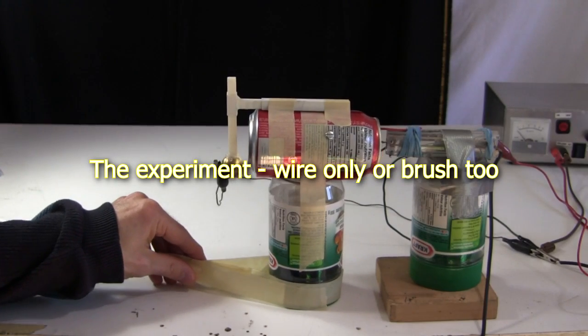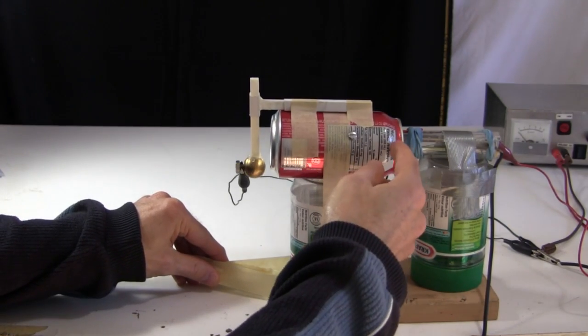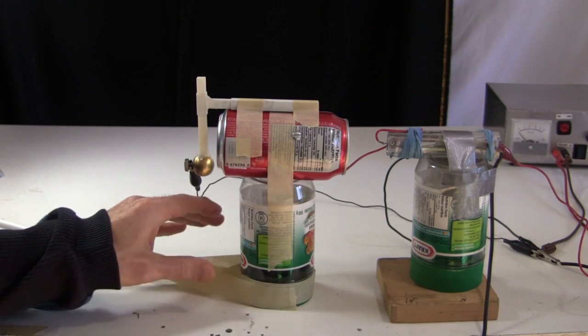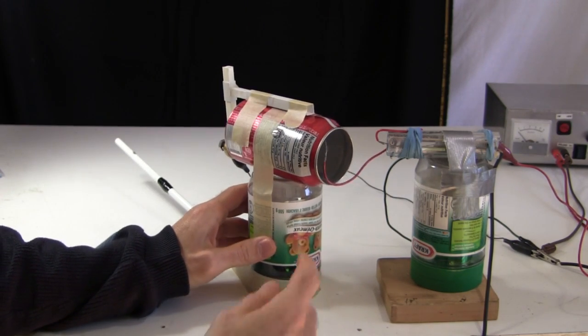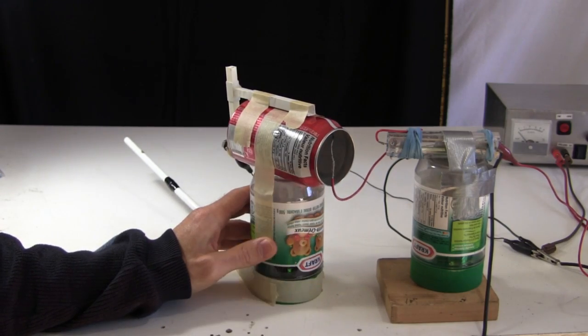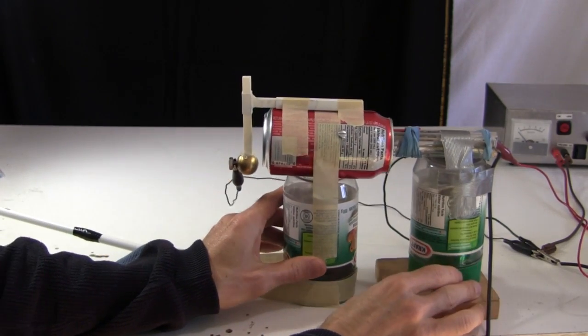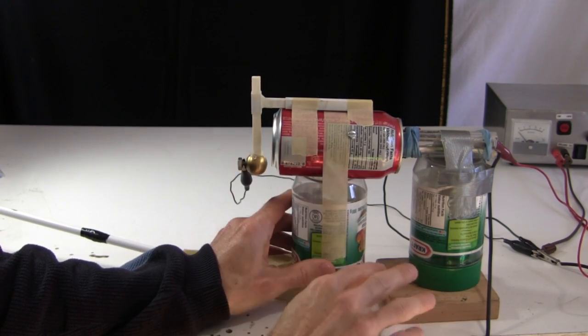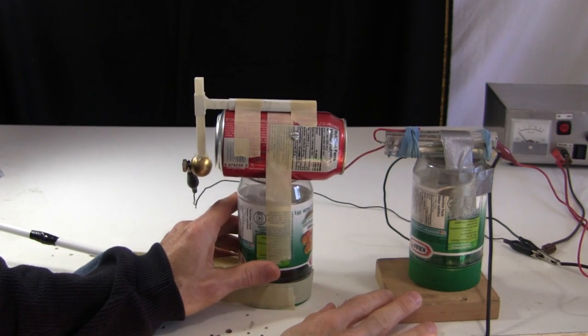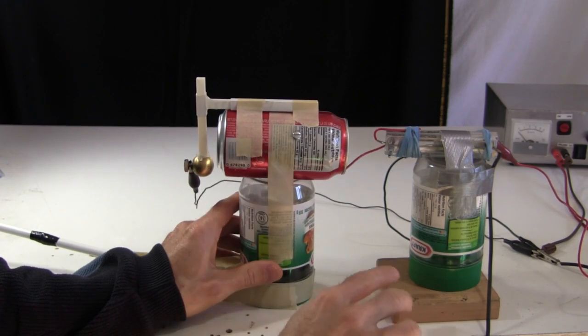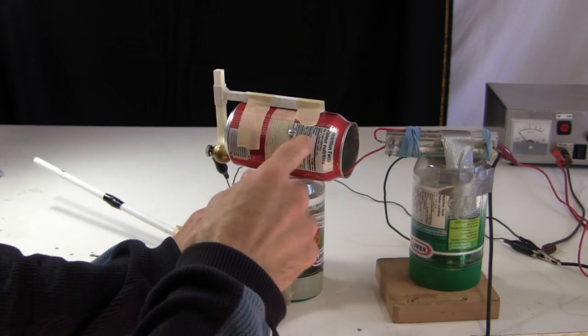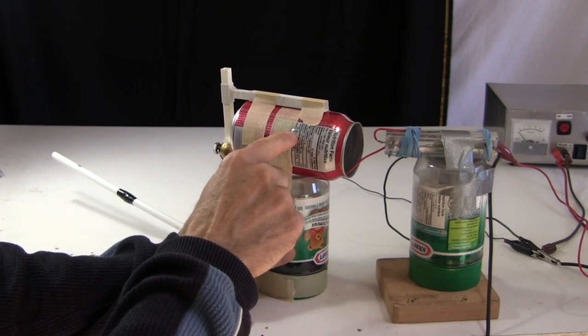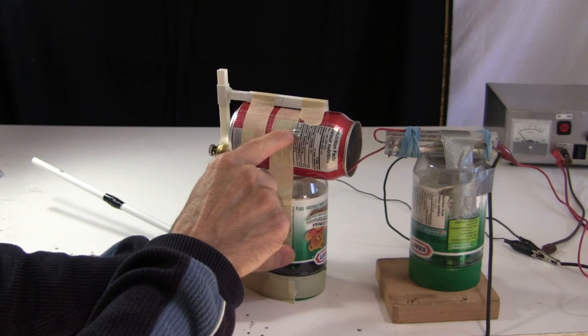So remember the experiment was whether the brush has to be inside the can or whether just the end of the wire has to be inside the can. Now I found a problem here. The inside of the can actually has a thin insulating coating on it. So, if the wire is in like this, it has plenty of contact with the inside and will make better contact than if the wire is out like this. There's less of the wire touching the inside of the can. So, what I've done is I've attached a nut and bolt right here and bolted the end of the wire to that. That way I'm sure the wire is always in touch with the metal of the can.